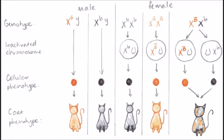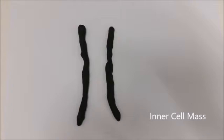At approximately the sixth embryonic day, each cell in the inner cell mass of a female calico cat contains two active X chromosomes.